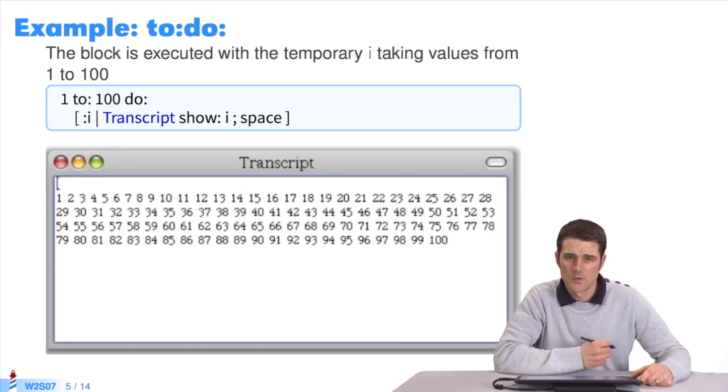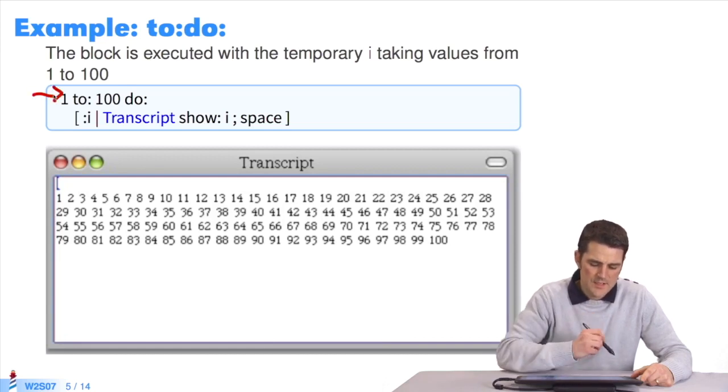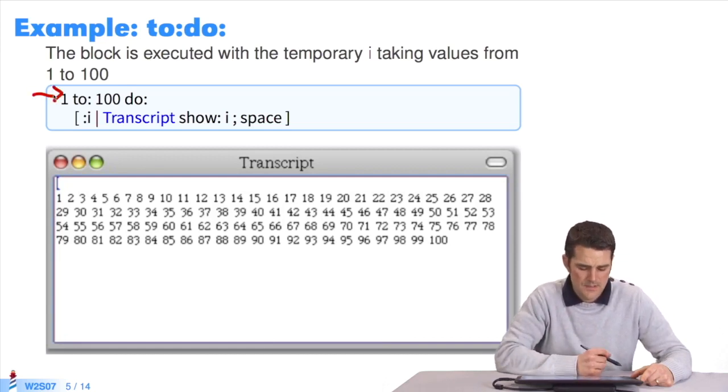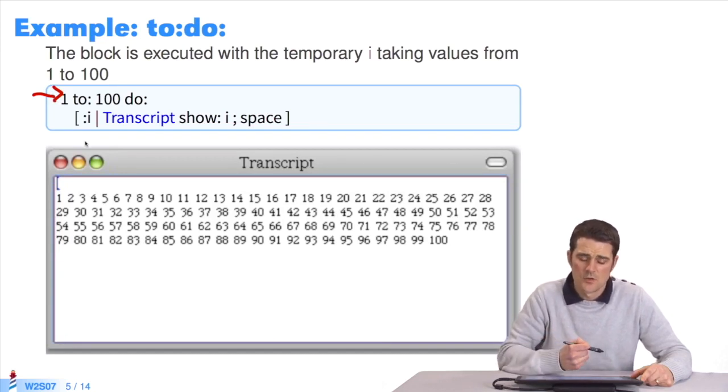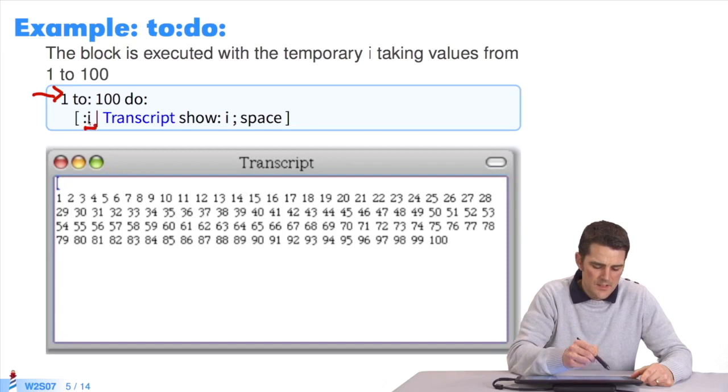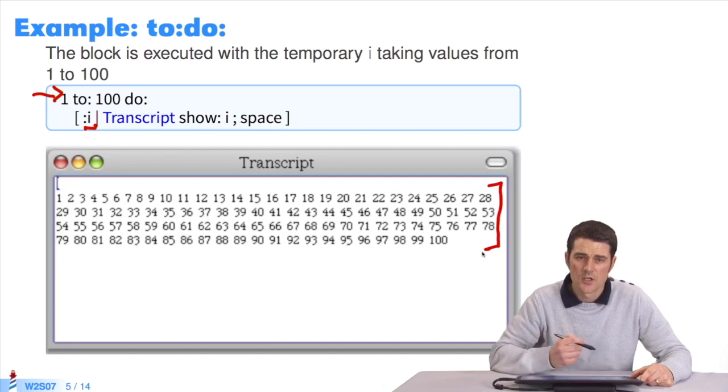For instance, with the exact same example, I send the message to do to the integer 1. In the block, you display the parameter of the block, the parameter i at each loop. In the transcript, you have all the integers between 1 and 100.